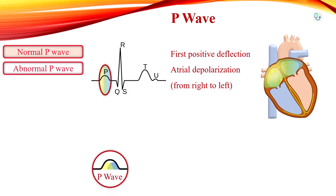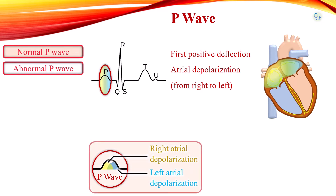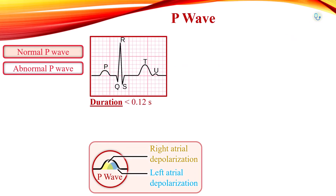In the figure, right atrial depolarization is colored yellow and left atrial depolarization is colored blue. The first one-third of P wave corresponds to right atrial depolarization, the final one-third corresponds to the left atrial depolarization, and the middle one-third is the combination of the two. The duration of P wave should be less than 120 ms, or three small squares.